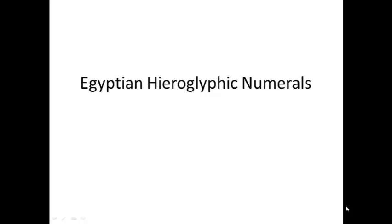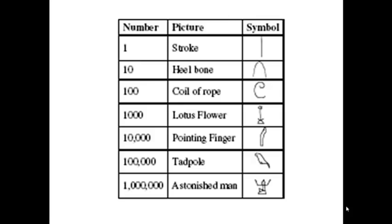The first group of numerals we're going to consider are the Egyptian hieroglyphic numerals. We have seven symbols. At this point you might want to stop and print out this table so that you would have it — on most of the slides there's a little picture of the table, but a big picture might be easier to refer to.